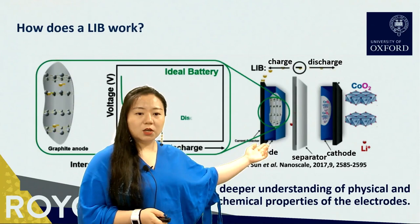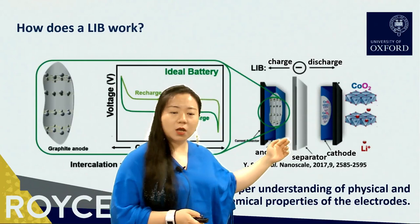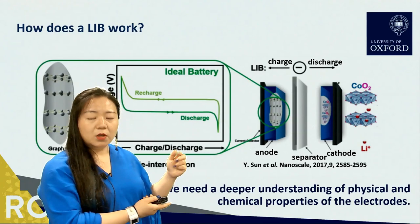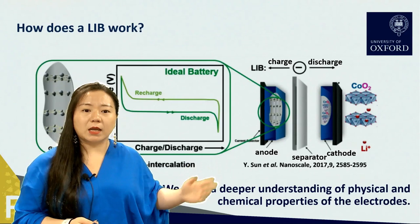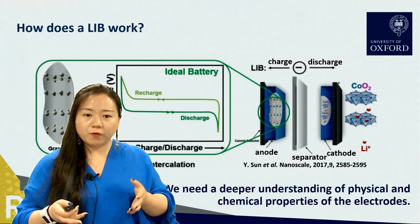During discharge, the lithium ions jump into the electrolyte, pass the separator, and are stored in the cathode. The electrons move through an outer circuit. During charging, both the lithium ions and the electrons move in the reversed direction. All these components contribute to the operation of the lithium ion battery. We are interested in performance metrics such as energy density, power density, and lifespan.